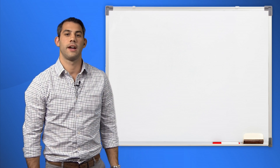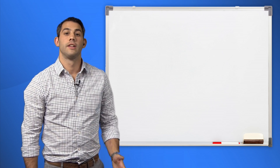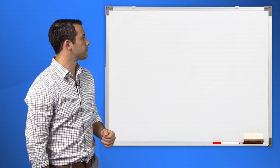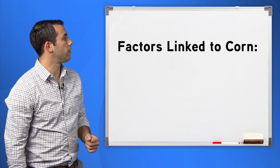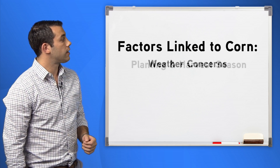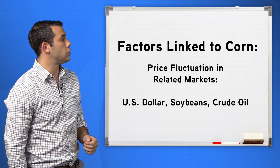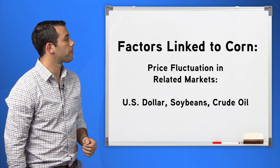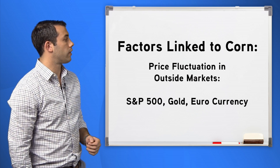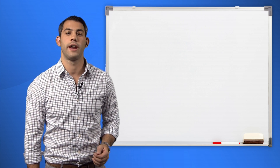The exchanges recognize futures spread trading is generally less volatile than being just long or short an outright futures contract. Let's look at an example of how potentially lower volatility is another benefit of spread trading. Here are some of the fundamental factors related to the corn market: weather concerns such as drought or flood, conditions during planting or harvest seasons, crop report data, price fluctuation in related markets such as the US dollar, soybeans, or crude oil, and price fluctuation in outside markets such as the S&P 500, gold, or the euro currency that may affect all market sectors. Uncertainty and market reaction to fundamental factors create volatility.